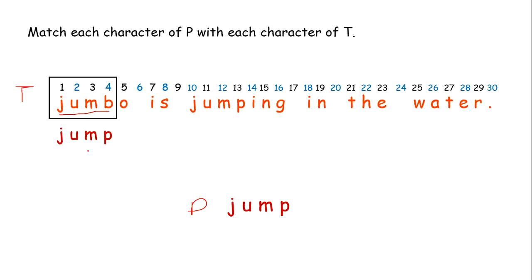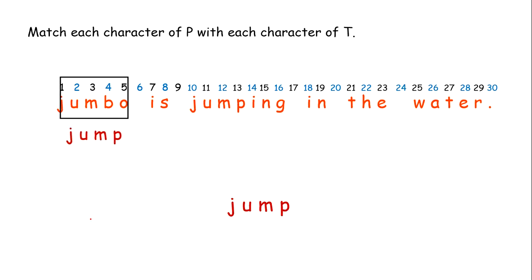How do we compare? We take the first character of the substring and compare it to the first character of the pattern. J compared to J — match. Next character: U compared to U — same. Move to next: M — same.